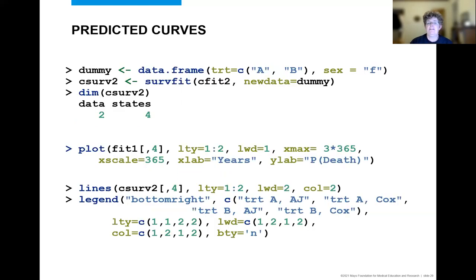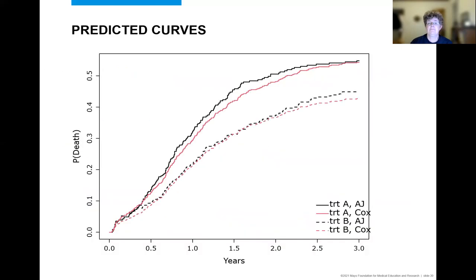One of the advantages of fitting these models simultaneously is that you can then create predicted time and state curves for different scenarios. The surface object from the Cox fit can be treated as though it's a matrix with rows corresponding to the new data that I've created here, just two rows for treatment A and treatment B and just looking at females. And the columns are for each state. So shown here is code for plotting death using the original data and using predictions from the model. And the observed and predicted lines matched fairly well, given that the predicted was fit just for the females.